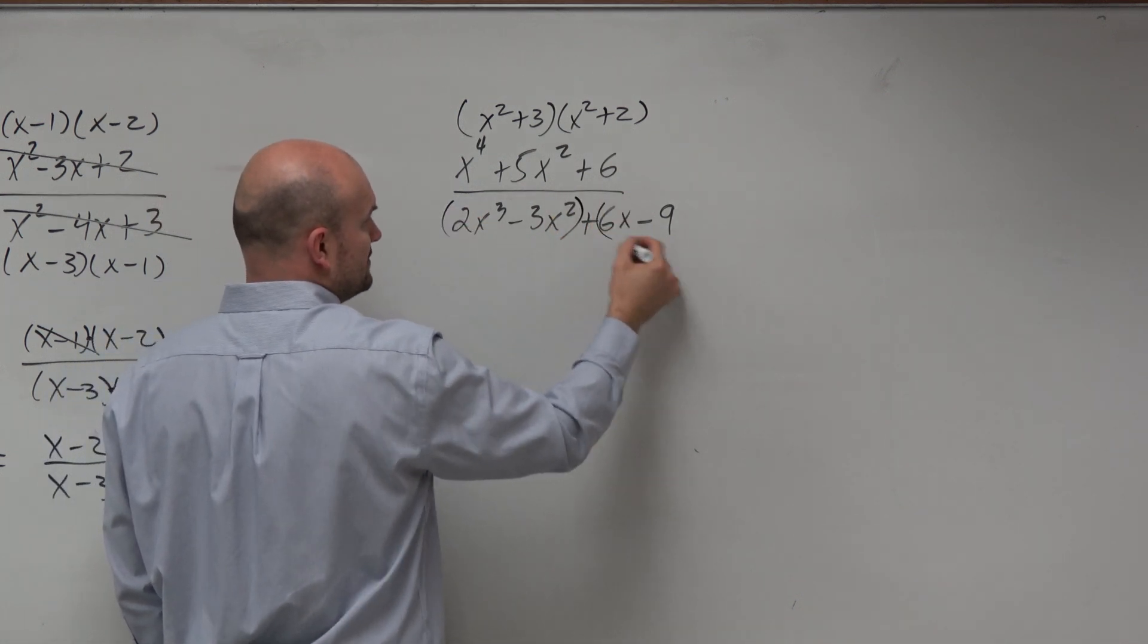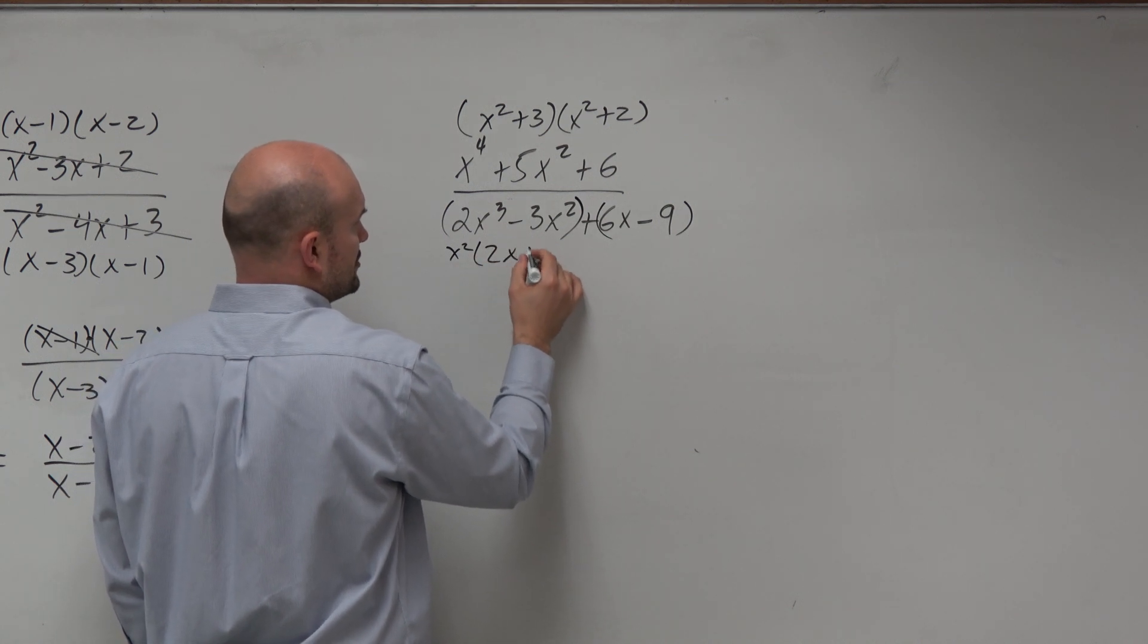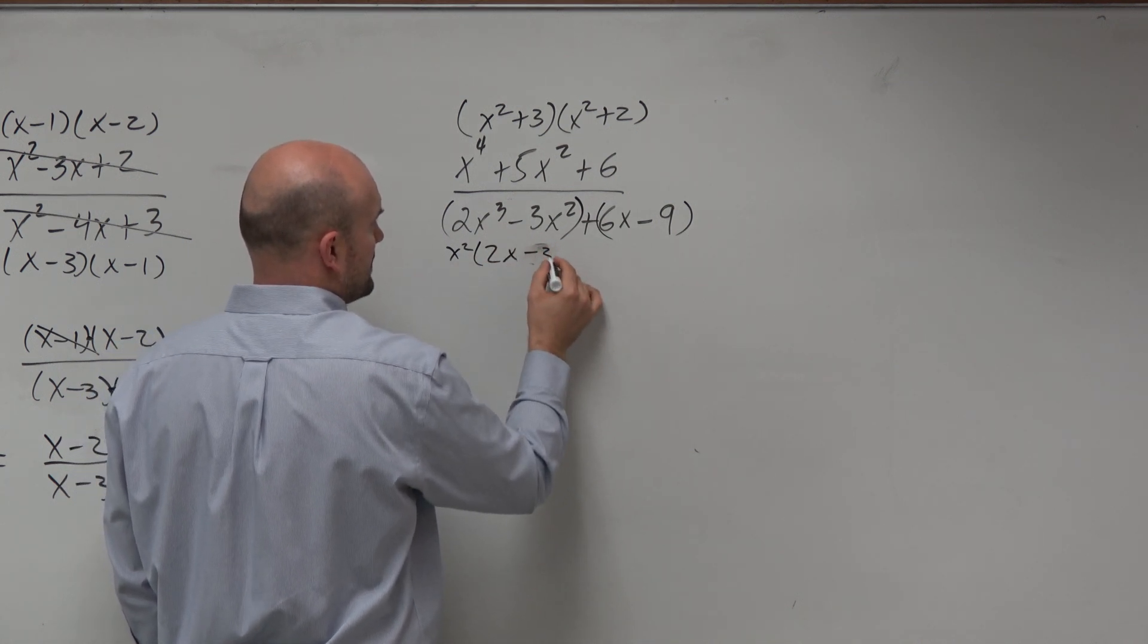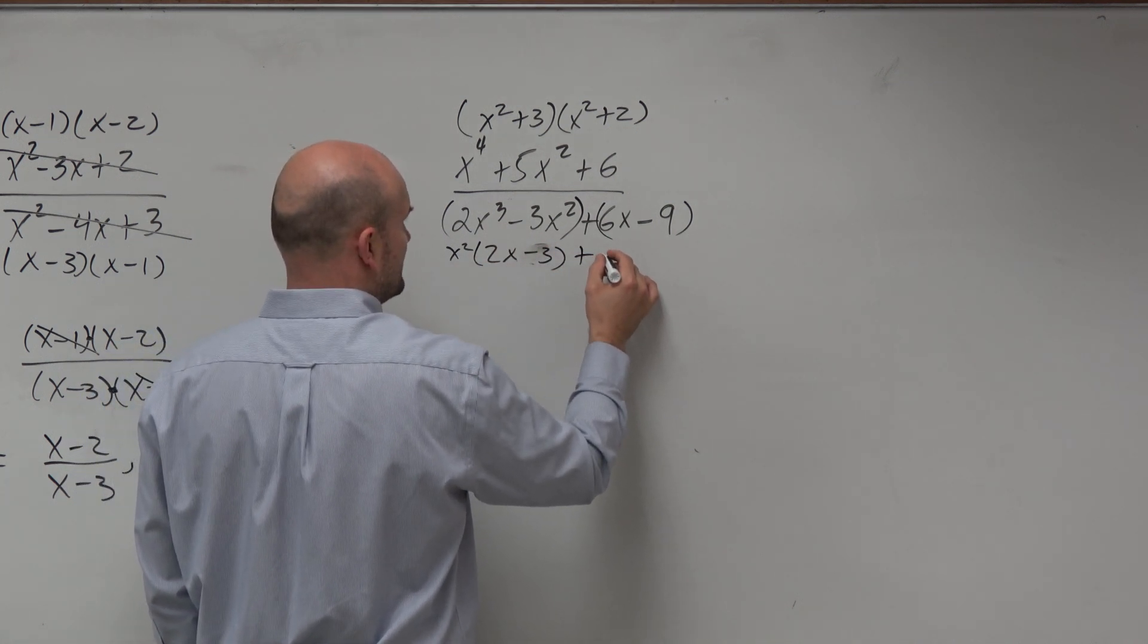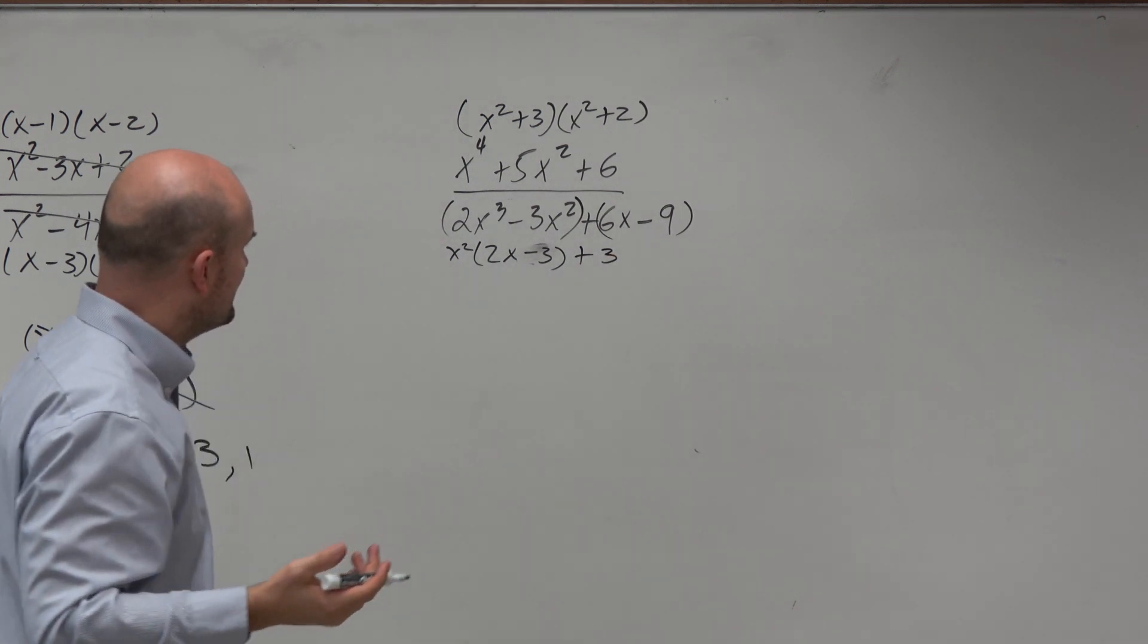Here, I'm going to have to factor by grouping. So let's see, I could factor out an x squared, 2x minus 3. Here, I'd factor out a positive 3. Did I not change that? I thought I changed it.